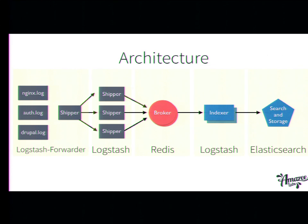The architecture now looks like this: we start with the same setup — we have Logstash Forwarder instead of syslog — and then we have several Logstash instances which take on the data. We save this data to Redis, and from Redis it goes to Logstash, which does the indexing and saves it to Elasticsearch. Done.